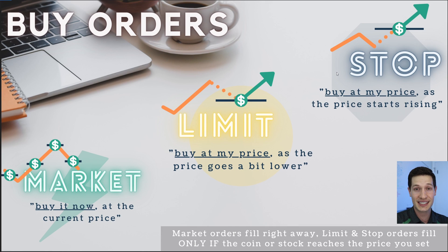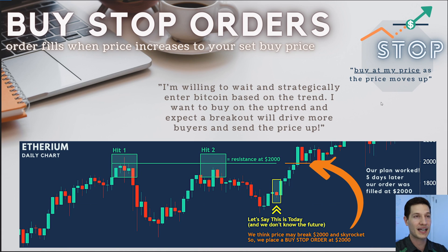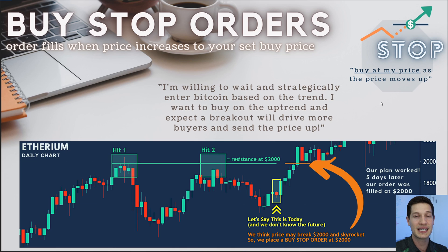A stop price is similar — you get to set what price you want to buy the coin at, however you set it above where the current price is. This takes advantage of following a trend. Most people think about a stop order as a stop loss order — you've already bought the coin and want an order in case the market falls. But buy stop orders simply mean you want to set the price above the current price to get into the coin.